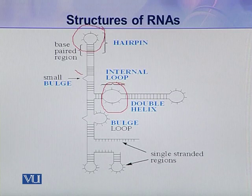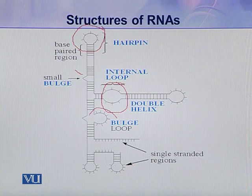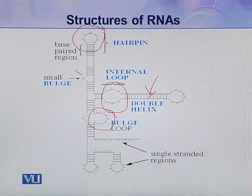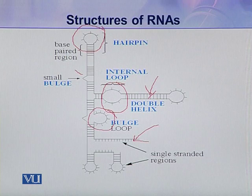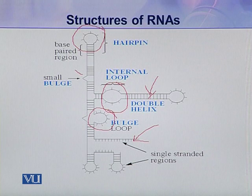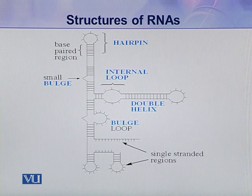If more than two or three bases are not complementary to each other, then a larger bulge loop is formed. So at some points the molecule is double helically coiled, and at other points it is single stranded. In this way, a number of secondary conformations may be present in a ribonucleic acid.